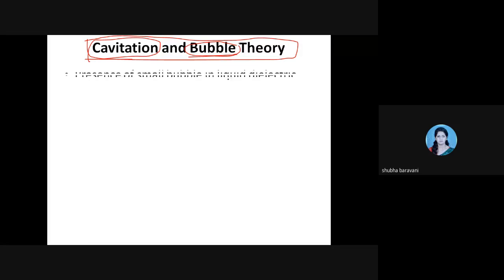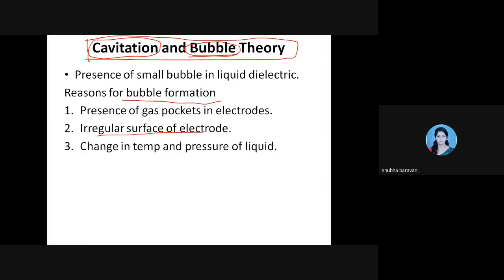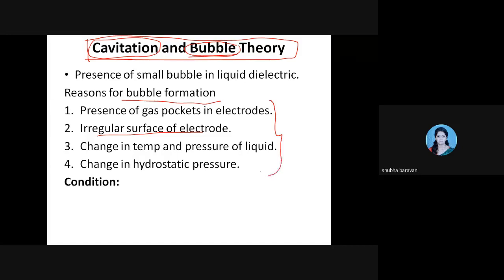We had seen different reasons for the formation of bubbles. The first was presence of gas packets. Another was the irregular surface of the electrode. One more reason may be change in temperature and pressure of the liquid dielectric, or hydrostatic pressure change. Viscosity could also be a reason for the formation of a gas pocket or bubble.